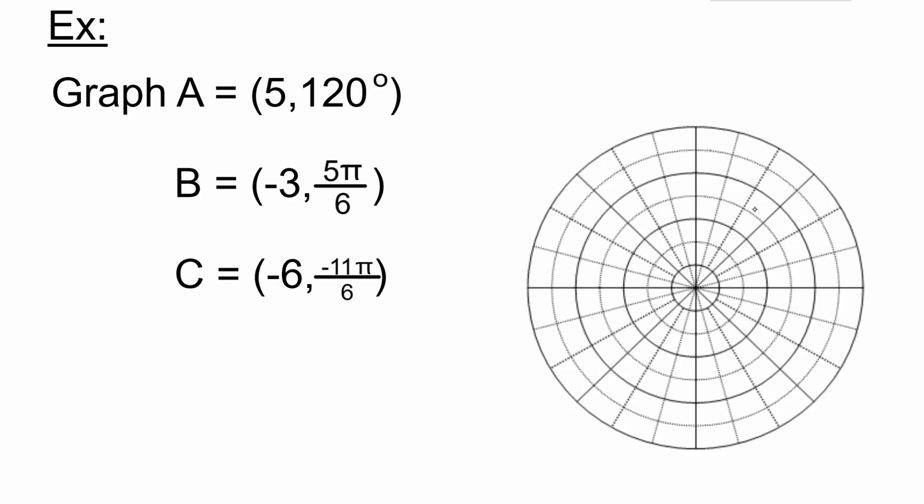For A, we have (5, 120°). Typically with x and y, you'd go over then up. What I usually do is start with the degree, so I go out to 120°. There are more lines than on the unit circle—they go up by 15 degrees. Here's 60, 90, 120 would be right there.